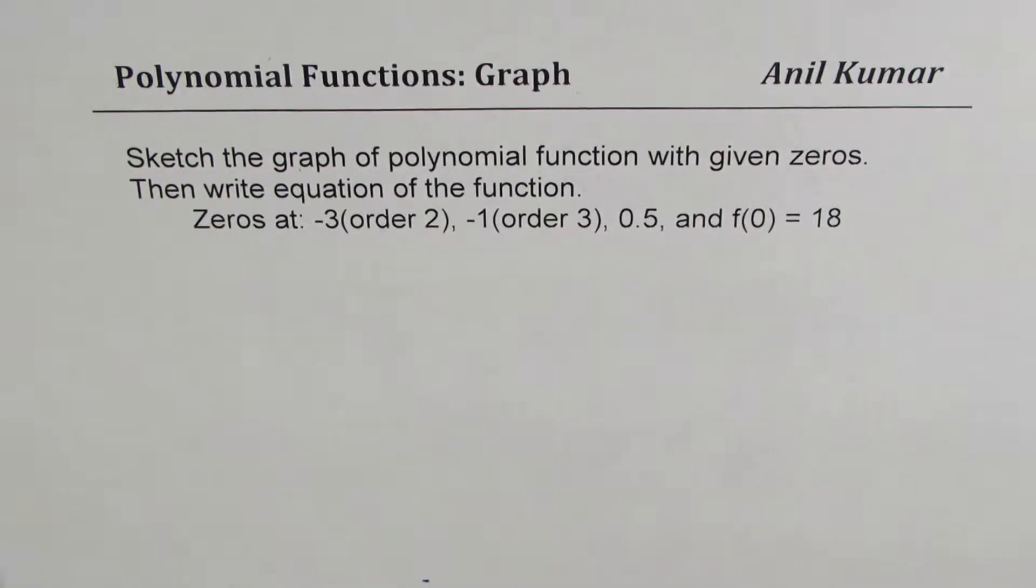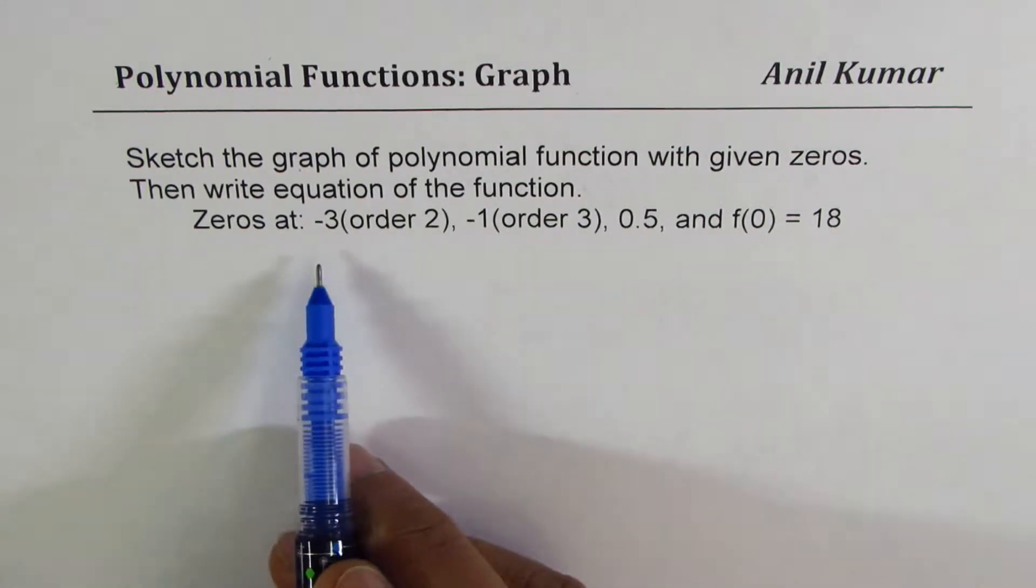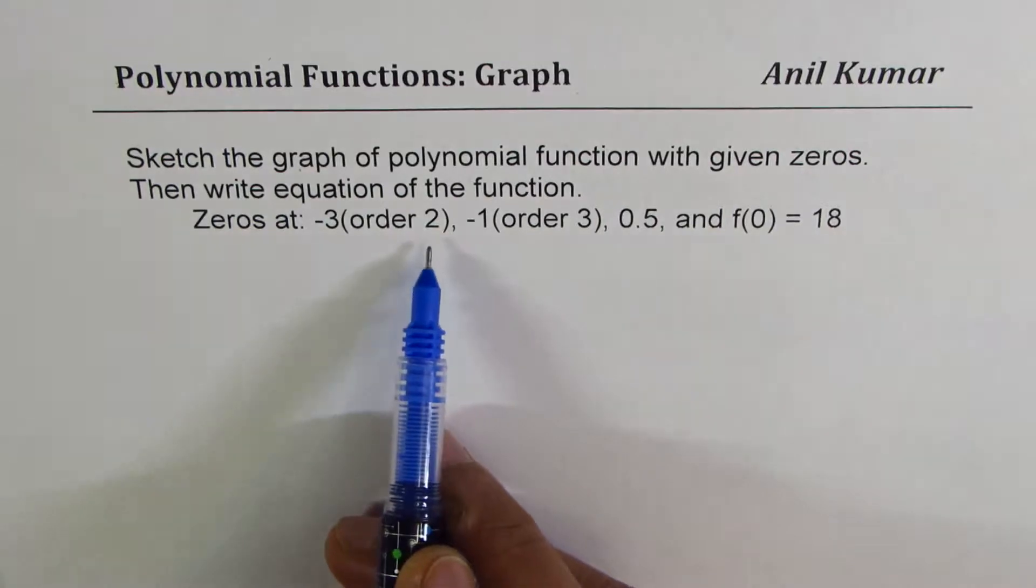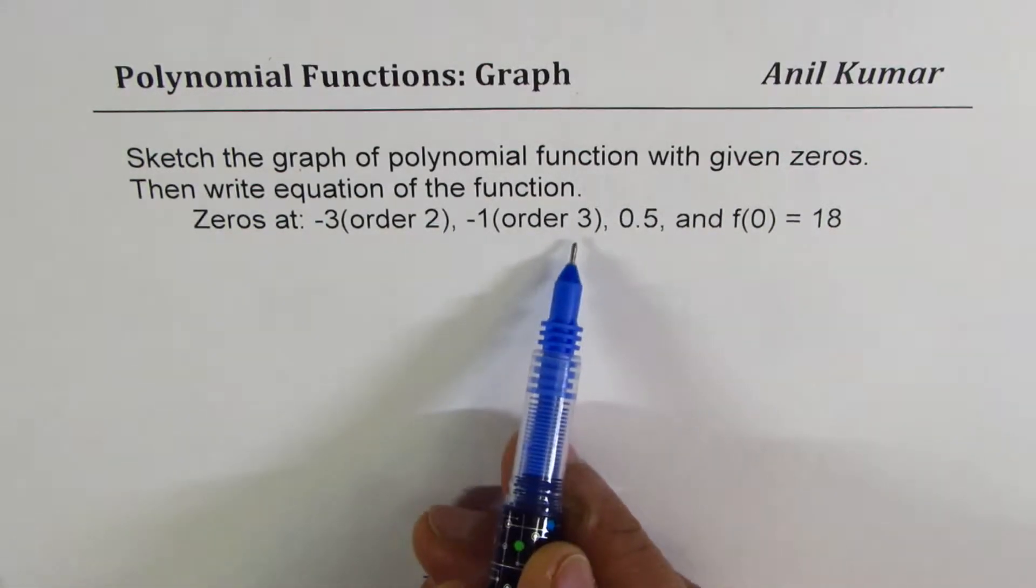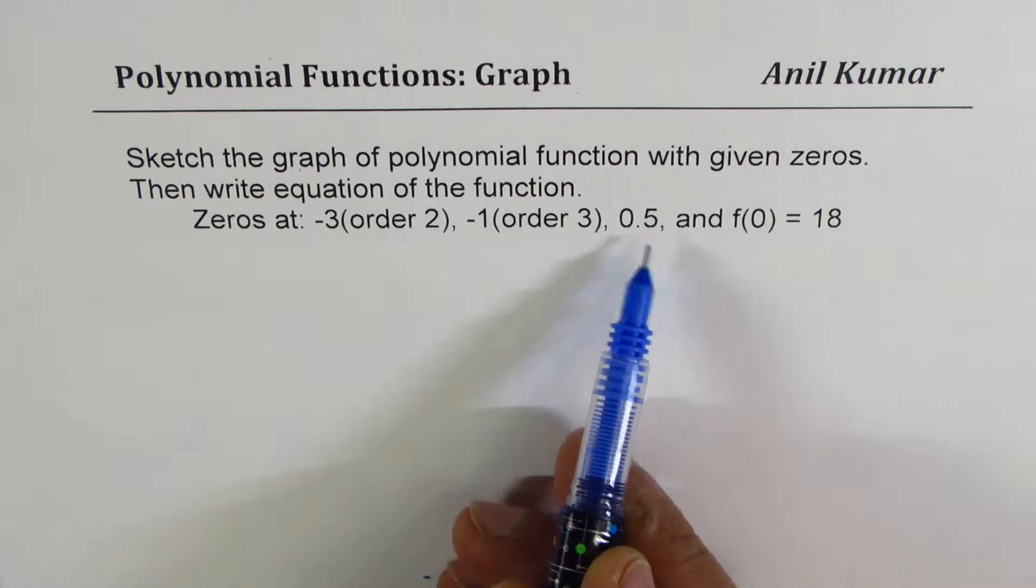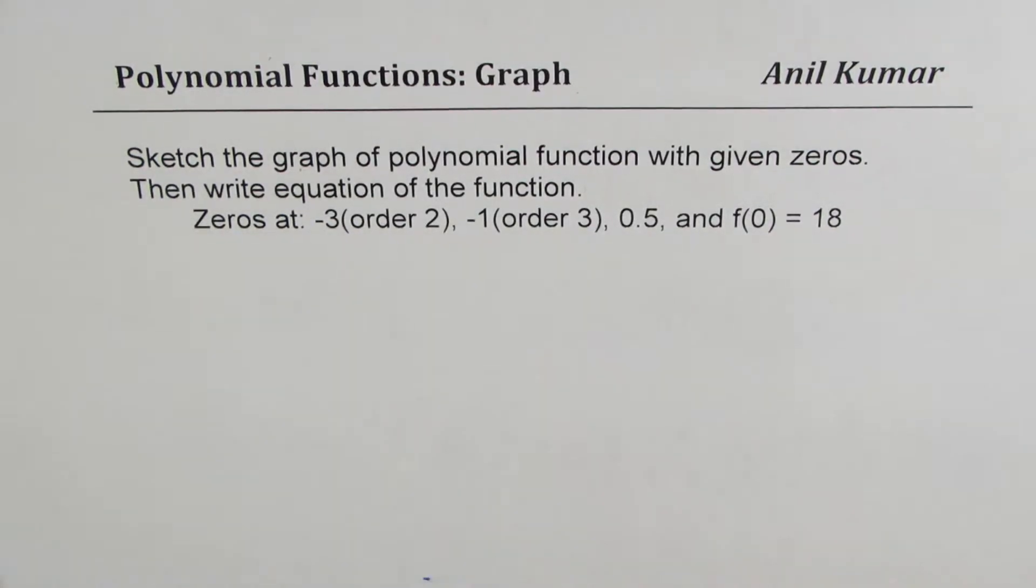The question here is, sketch the graph of polynomial function with given zeros, then write equation of the function. Here, zeros at minus 3 order 2, minus 1 order 3, 0.5, and f of 0 equals to 18.